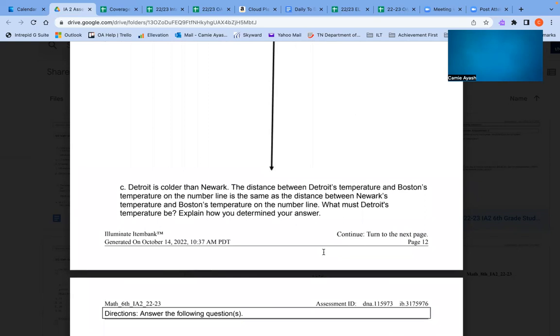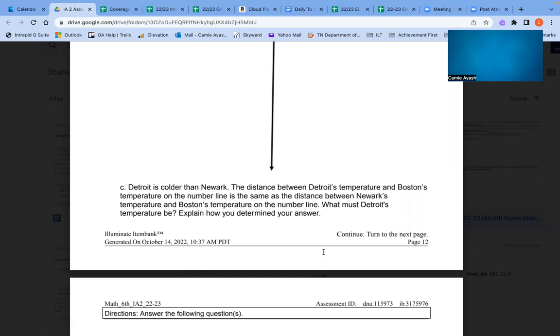Part B: Plot and label all four decimal representations on the number line using the point labels in the table. Part C: Detroit is colder than Newark. The distance between Detroit's temperature and Boston's temperature on the number line is the same as the distance between Newark's temperature and Boston's temperature on the number line. What must Detroit's temperature be? Explain how you determine your answer.